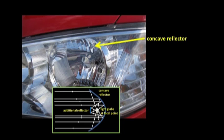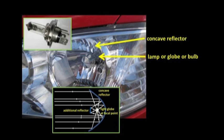This is a headlight's concave reflector. This is the lamp, which is also called a light globe or a light bulb. It's barely visible when it's in position, but this is what a typical one looks like. And this is the additional reflector.